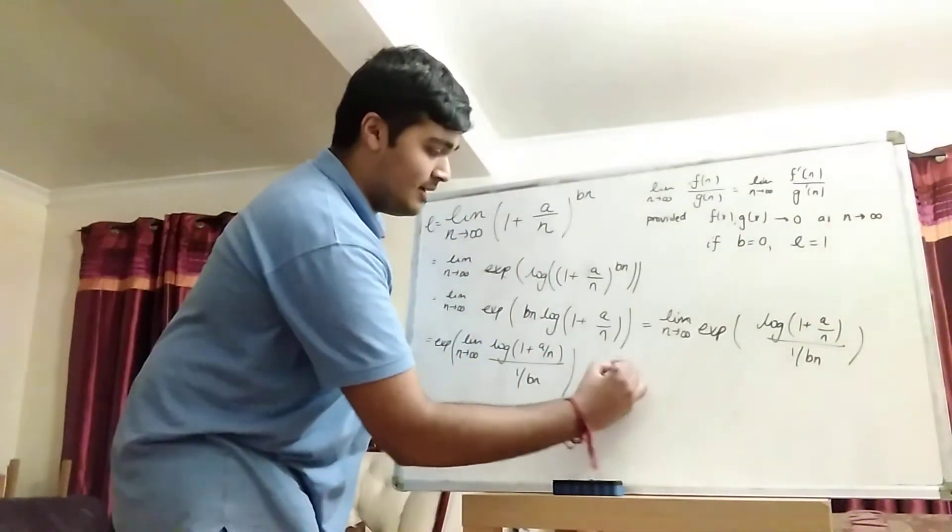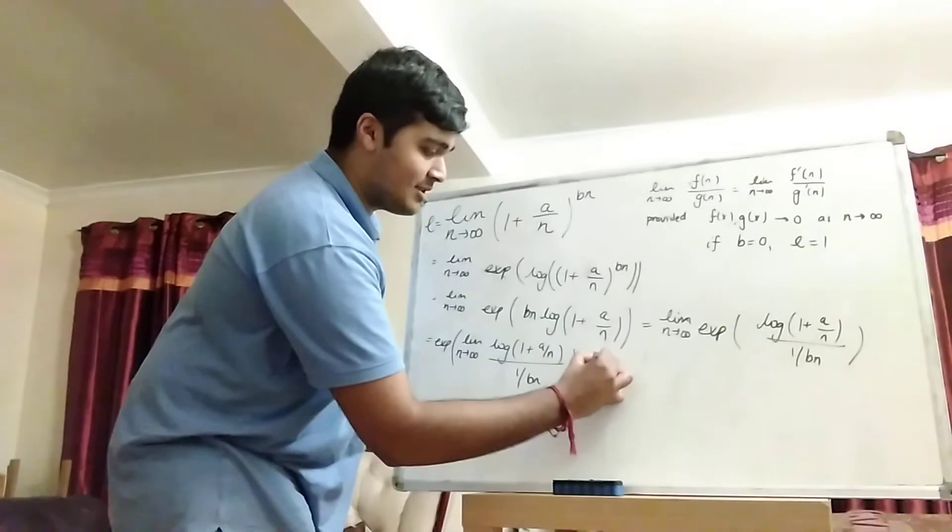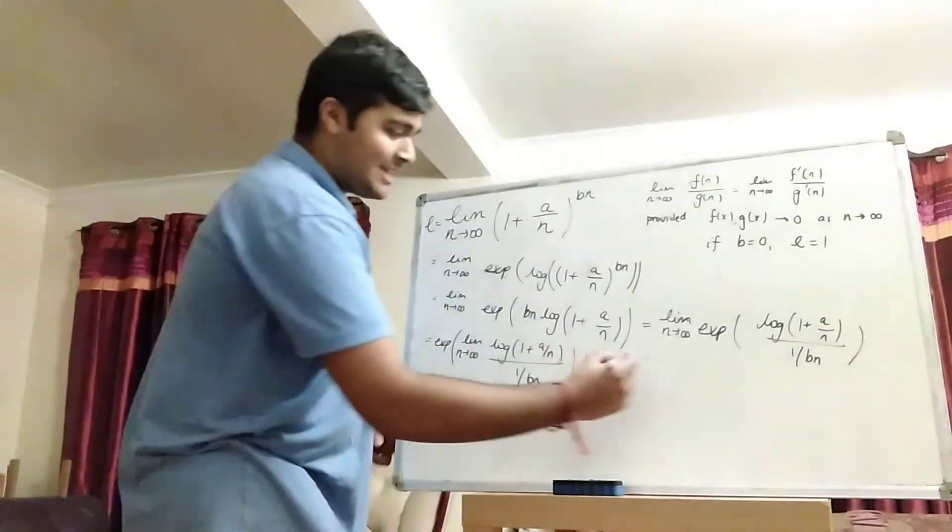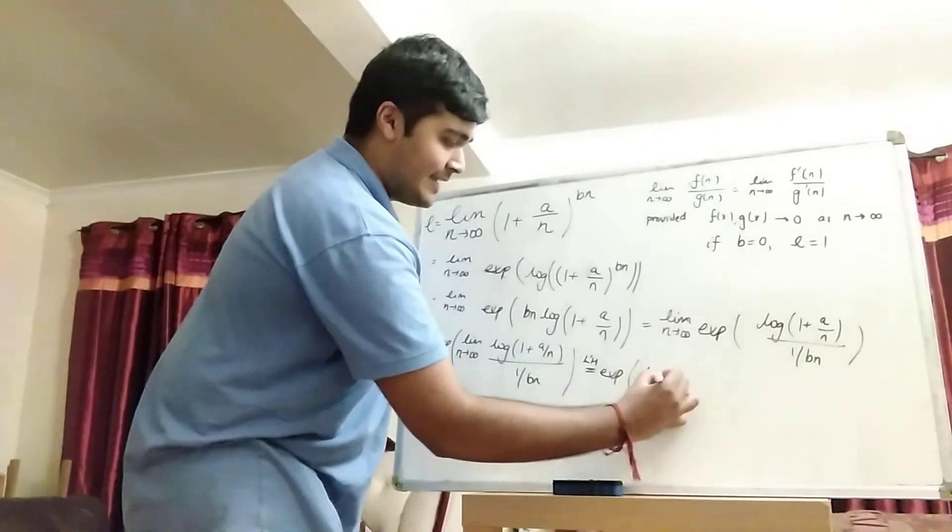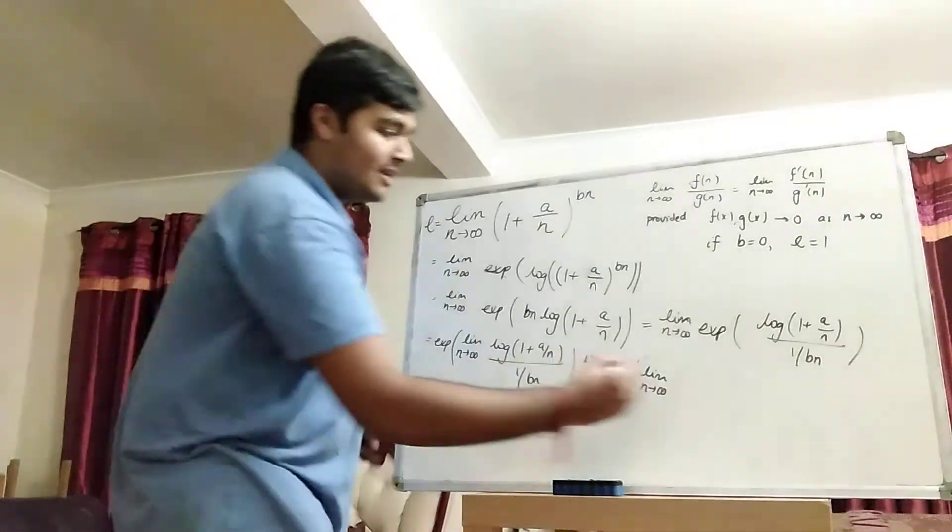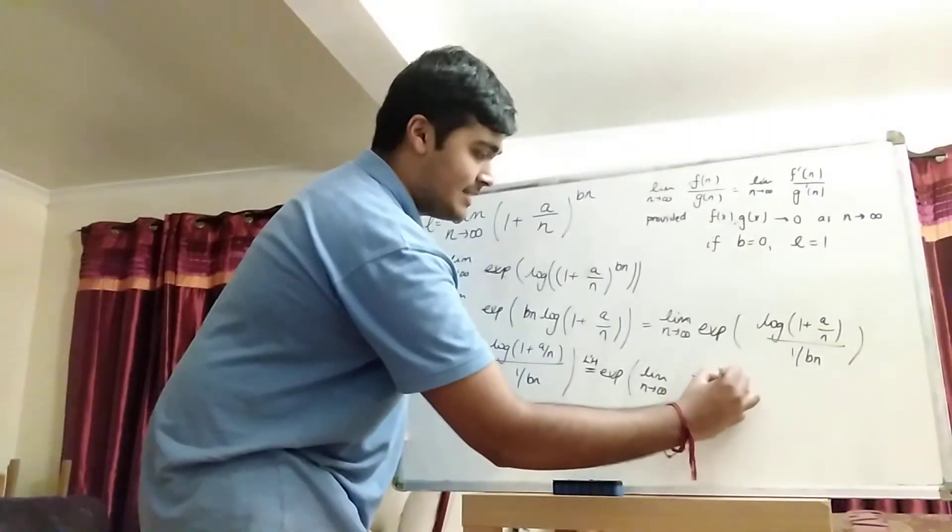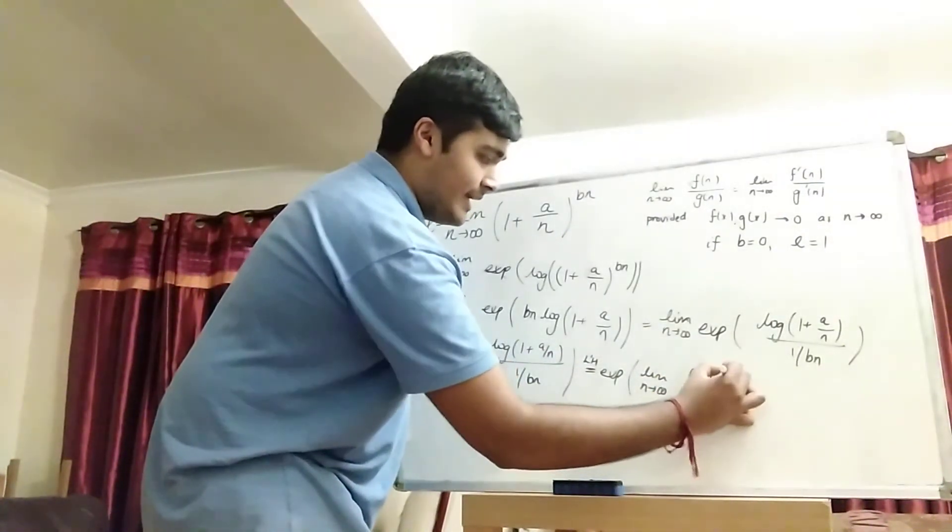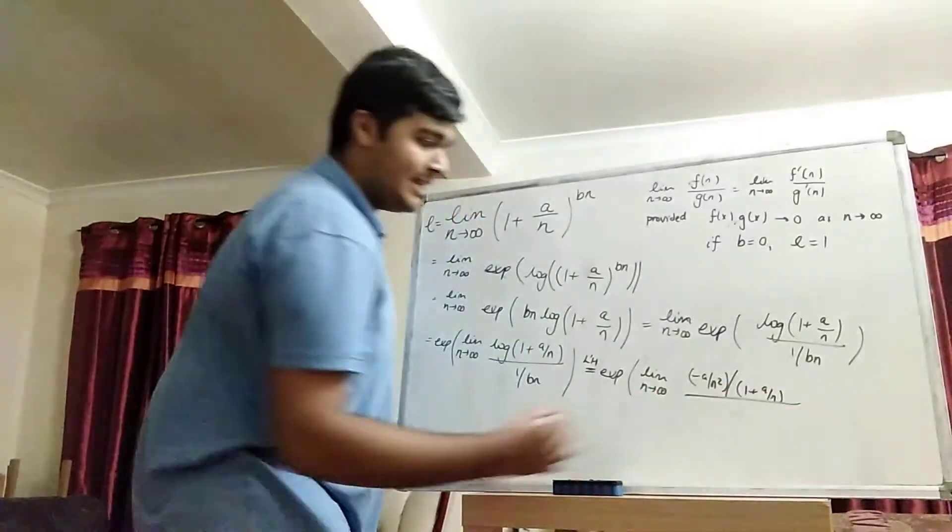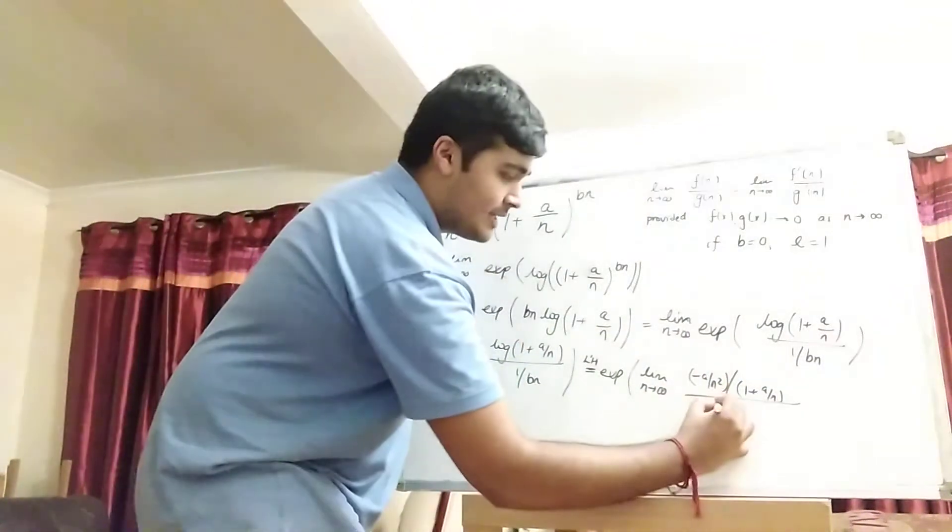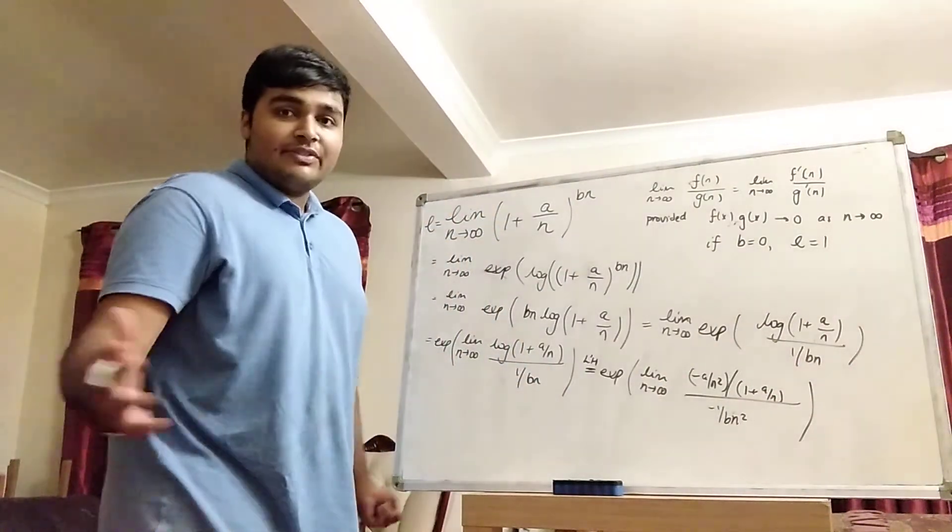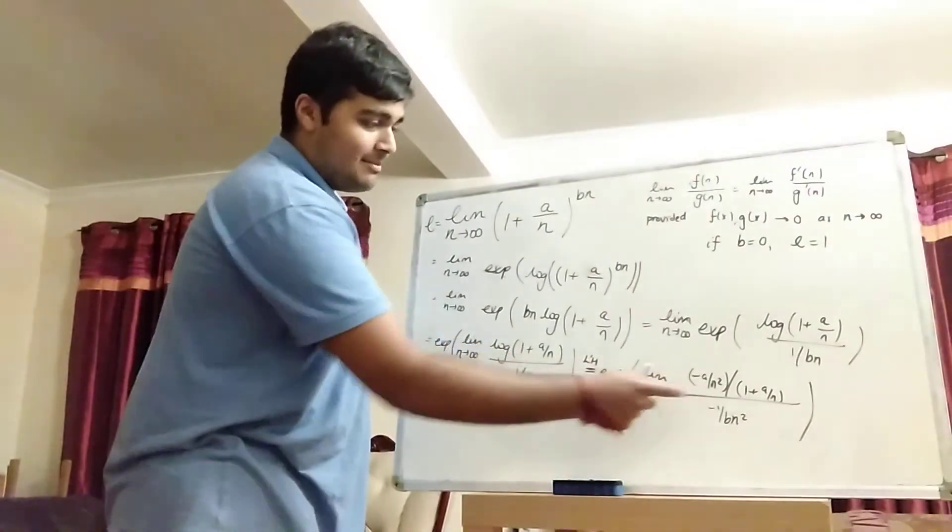So that's exactly what I'm going to do. I'll put an LH for L'Hopital. The exponential of, and don't forget the limit, as n goes to infinity. And on the top, we're taking the derivative of this thing here, which is going to be minus a over n squared divided by 1 plus a over n. And on the denominator, we're going to get minus 1 over bn squared.